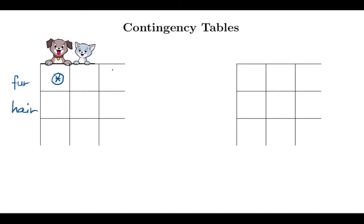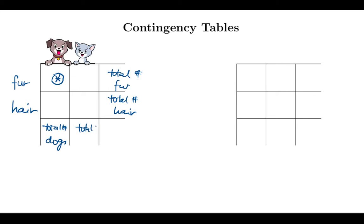What I record over here is the total number of dogs and cats with fur. Here is the total number of animals with hair. Here I have the total number of dogs and the total number of cats. These numbers are called the margins of the contingency table.